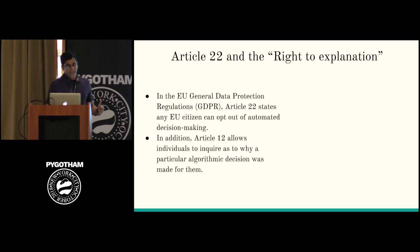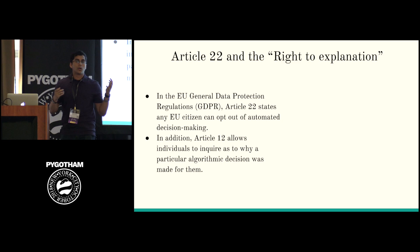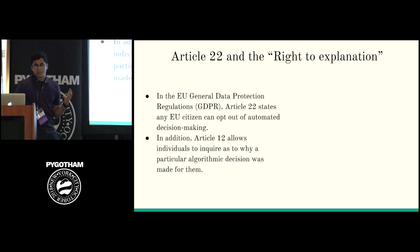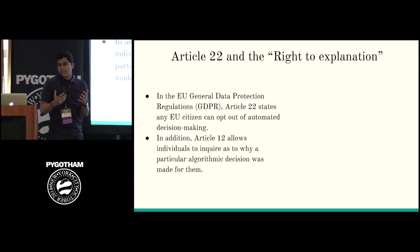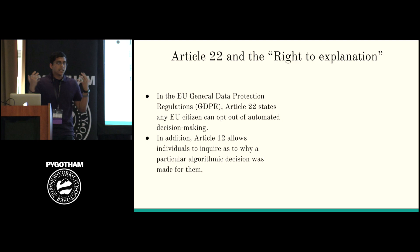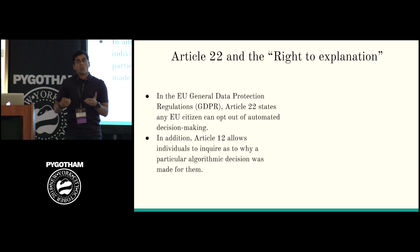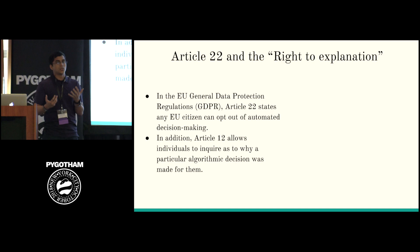Most importantly, the European Union put out GDPR — the General Data Protection Regulations. You might remember back in April and May receiving emails saying 'we updated our terms of service' — that's because of GDPR. There are two big articles we care about. Article 22 says any EU citizen can opt out of automated decision-making — if there's a model deciding if they get a loan, they can opt out. Article 12 says individuals can ask why the model made a decision for them.